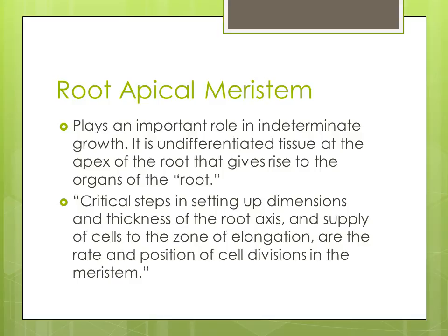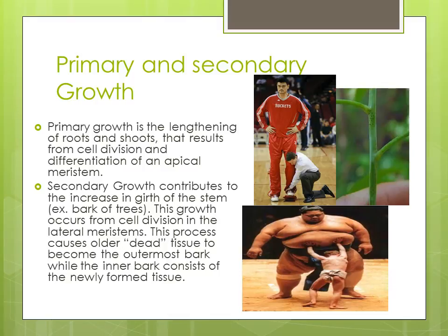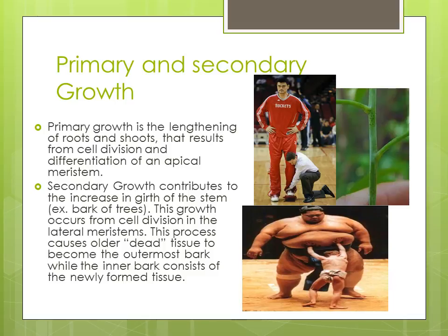To understand how a plant elongates and receives thickness, we need to talk about primary and secondary growth. Primary growth is the lengthening of roots and shoots — basically elongation of the plant — that results from cell division and differentiation of the apical meristem. Secondary growth contributes to the increasing girth of the stem; an example of this is bark on trees. This growth occurs from cell division in the lateral meristem, causing older dead tissue to become the outermost bark, while the inner bark consists of newly formed tissue. New tissue is produced at the center of the tree, and as older dead tissue gets pushed outward, it becomes what we know as outer bark.